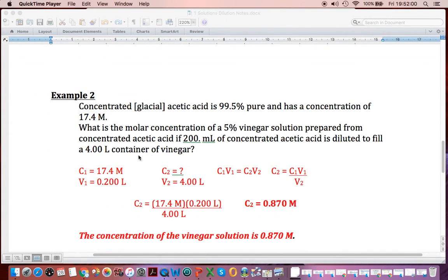We substitute in these numbers into this formula that we derived. And we go boom times boom divided by BAM. And we get BIM, 0.870 molar.